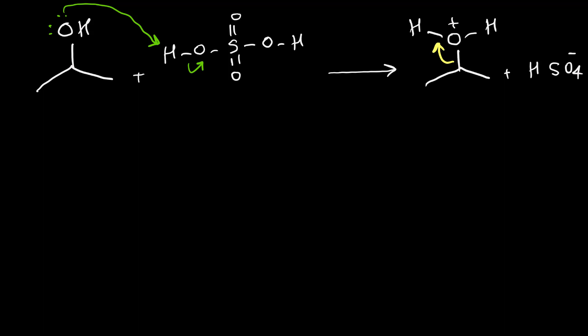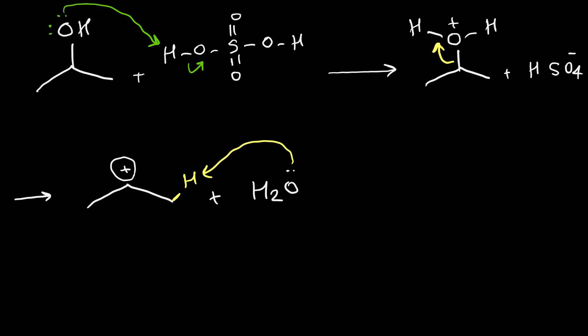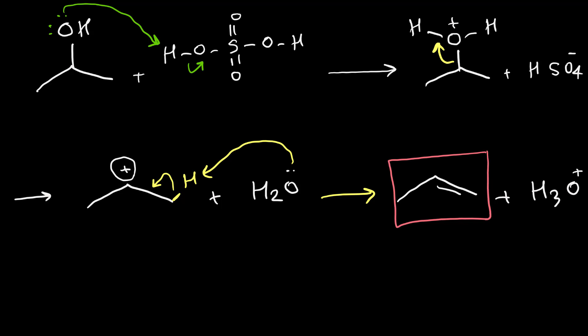This produces a carbocation — the middle carbon lost the leaving group and has a positive charge — plus water. This carbocation on its alpha carbon, or adjacent carbon, has hydrogen. Water can attack and take one of these hydrogens, so the C–H bond moves to the positive carbon and forms an alkene. In this example, formation of the alkene is simple and we have one possible product.